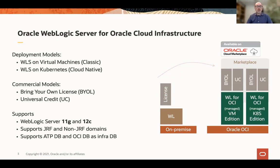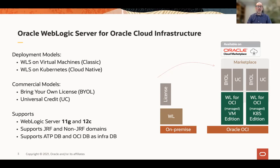WebLogic in the cloud supports multiple versions: 11G and 12C. We support JRF and non-JRF deployments. For JRF deployments, we will need a database, and that is what we will be doing in this lab. More specifically, in this lab we will be using an ATP, an autonomous database. But basically, as already mentioned, you can use any type of database that is available in the Oracle Cloud.